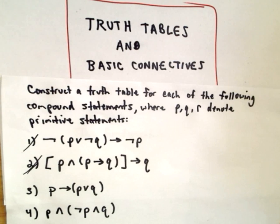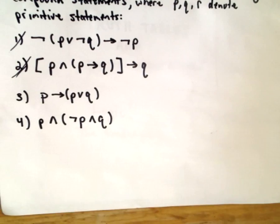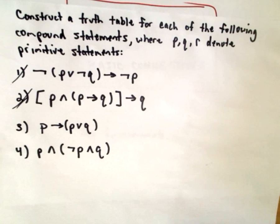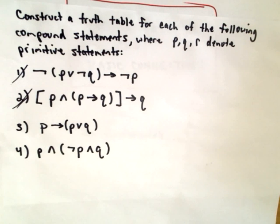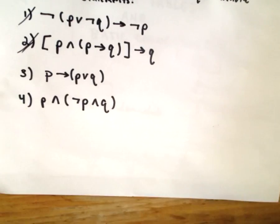Here I want to do a couple more examples of constructing truth tables. These will be a little bit easier — examples three and four — a little bit easier than one and two. But they will tie into some definitions that I want to talk about. So let's go ahead and do these.